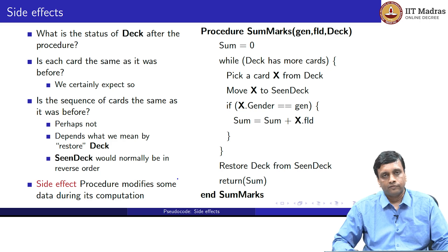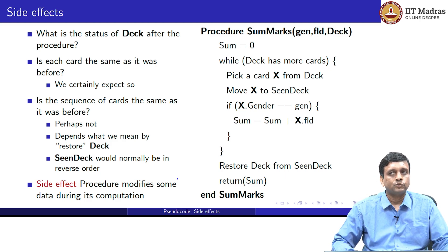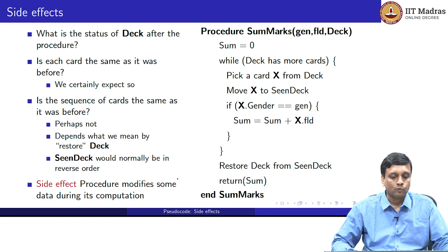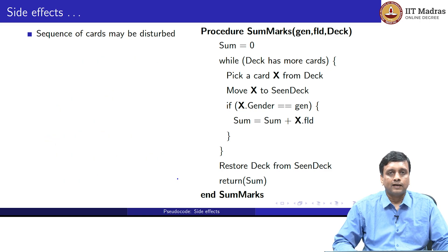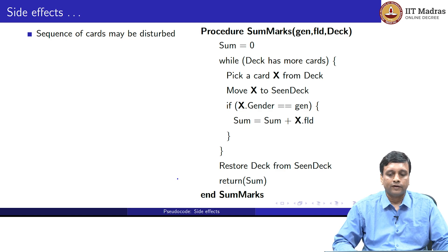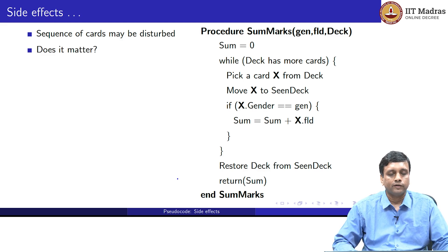This is what is called a side effect. A side effect is when we pass some information to a procedure and the procedure actually inverts, reverses, or does something to it which was not part of the procedure's requirement. In the case of the cards, a side effect is that the sequence of cards may be disturbed. When we asked it to find the sum of the marks, we did not require the sequence to be disturbed — it being disturbed was a consequence of how it was computed.